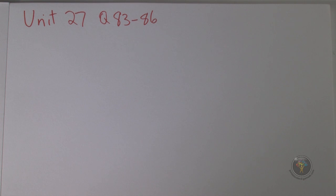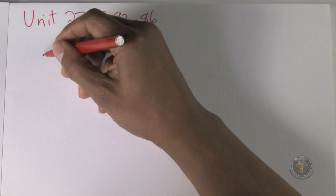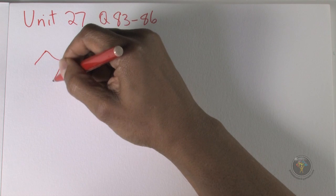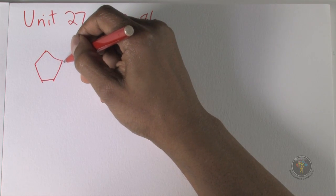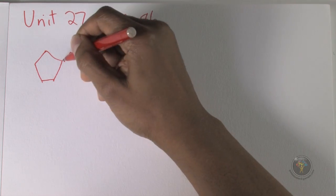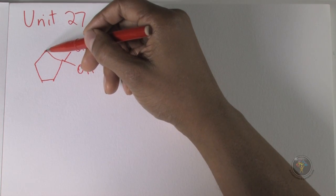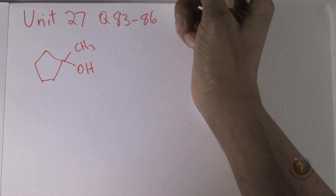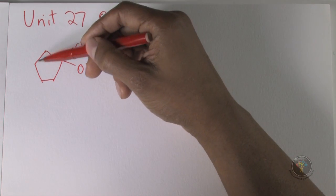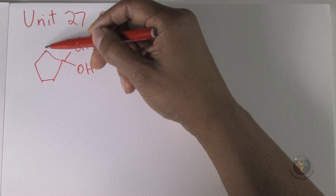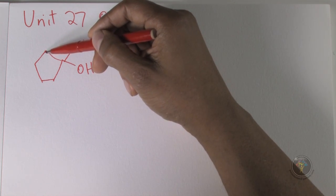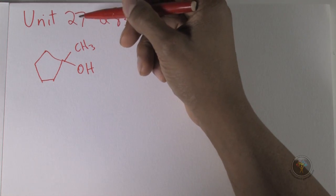Question 83: for compounds 1, 2, 3, and 4, those that have chiral carbons are... When you look at some of these molecules, wherever you see two hydrogens attached to a carbon — for example, there are two hydrogens here because there are two bonds shown, so there must be two other hydrogens you don't see. If there are two hydrogens, this cannot be chiral because chiral means it's attached to four different substituents.